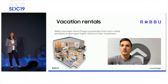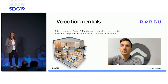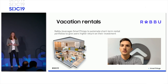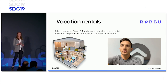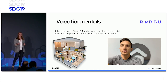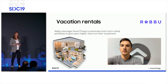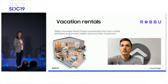Rabu solves a problem for operators managing multiple rental homes on a platform like Airbnb. Using SmartThings' ecosystem and APIs, Rabu allows these business owners to monitor and manage their assets remotely — completing basic actions like changing the locks when a new guest arrives, allowing cleaners to enter, or changing thermostat settings without making time-intensive visits to each individual site. Let's hear more from Rabu's CEO.